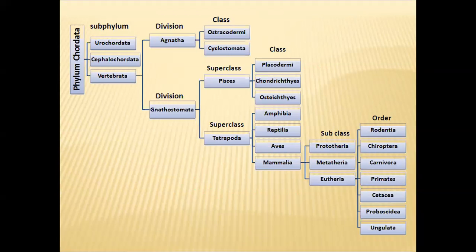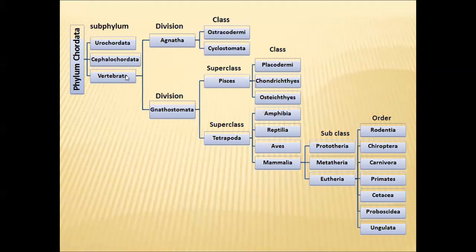Before entering into the topic, let us have a look at the classification of phylum Chordata. The phylum Chordata is divided into three subphyla: Urochordata, Cephalochordata, and Vertebrata. Vertebrata is also called Craniata, because the organisms placed under this subphylum possess vertebrae in their backbone.